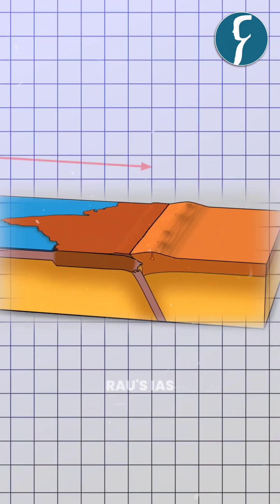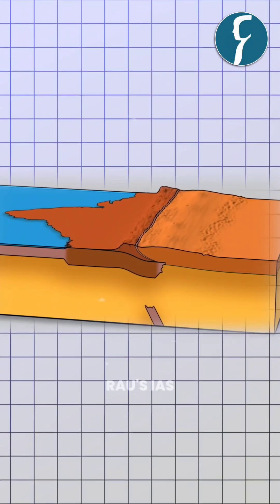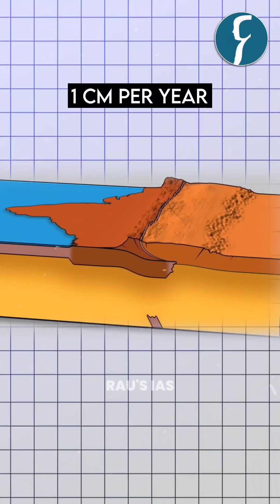You won't believe that the Indian plate is still moving at a pace of 67 mm per year and the Himalayas are growing taller by 1 centimeter per year.